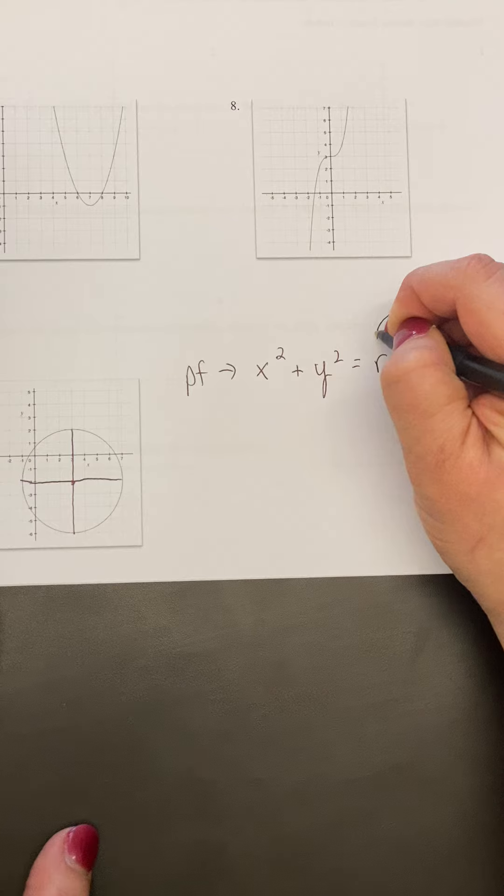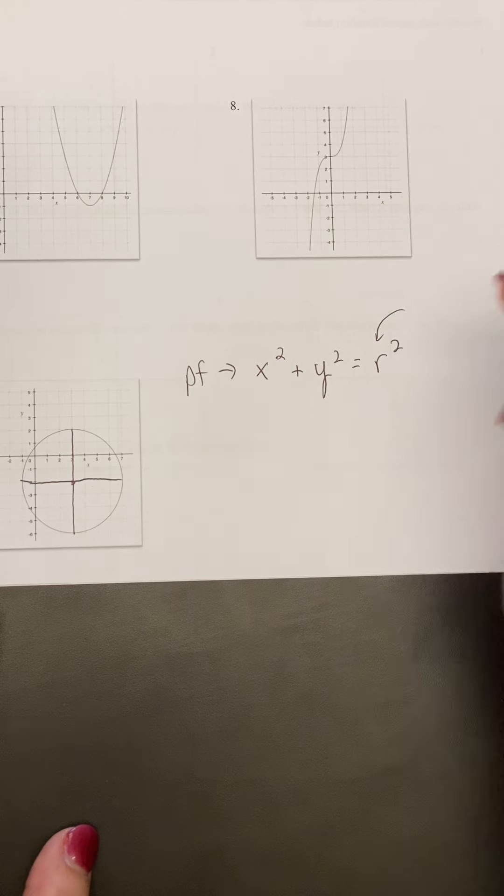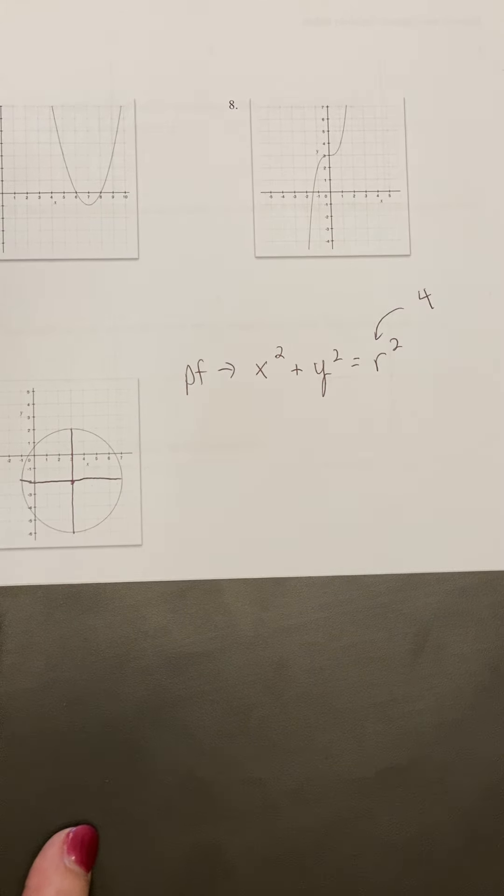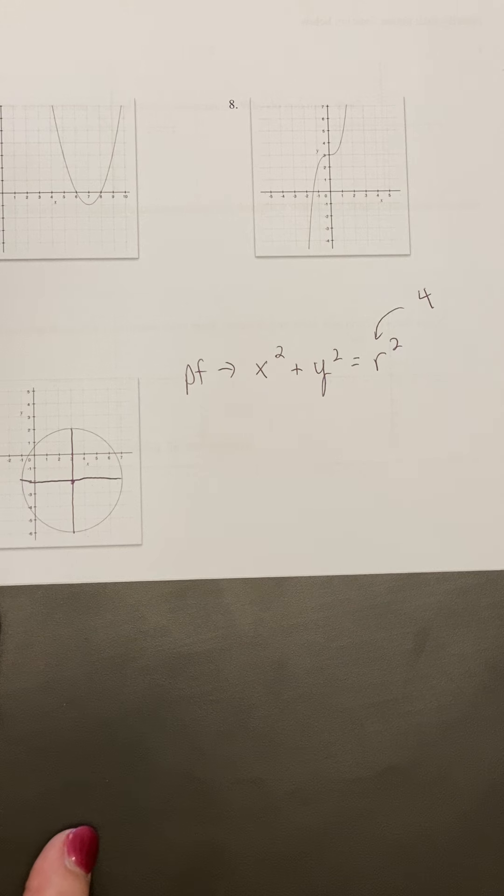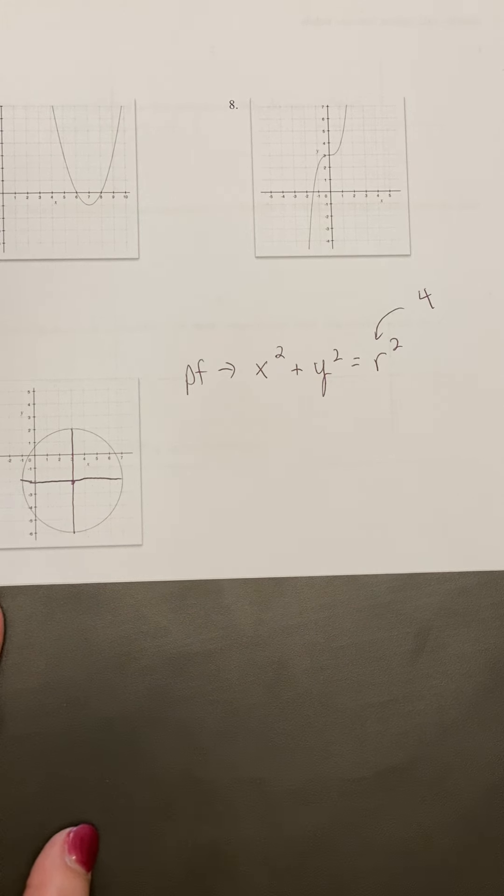So my radius in this case is 1, 2, 3, 4. Okay, so we've got part of it. Now we need to think about how to get back home.